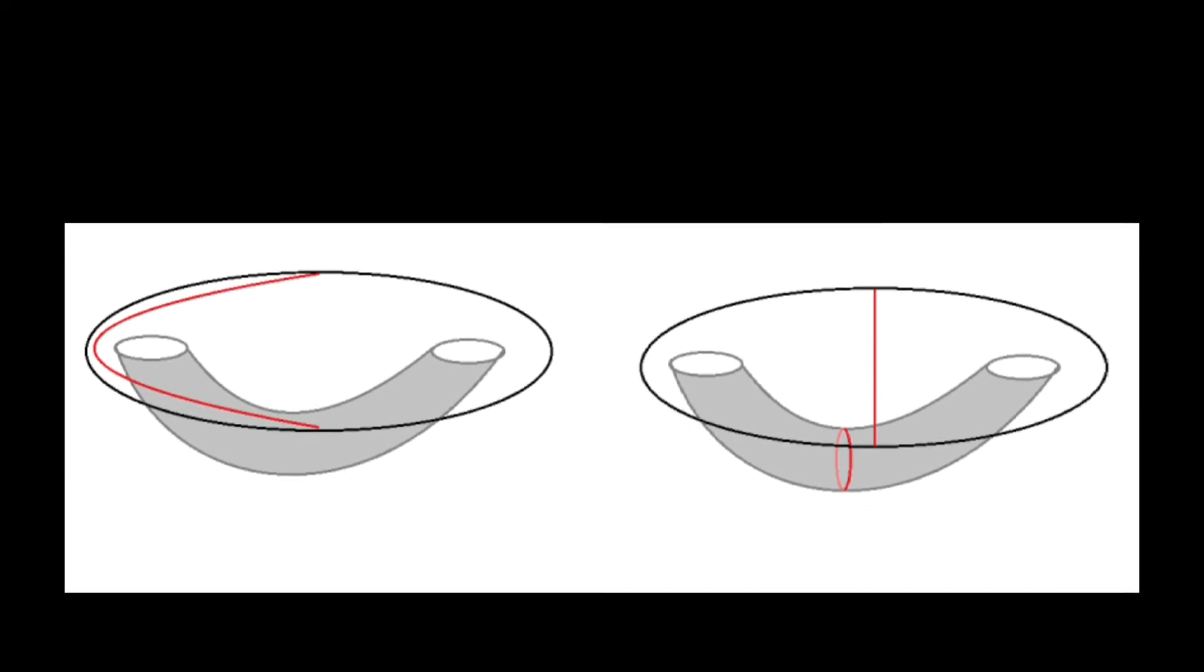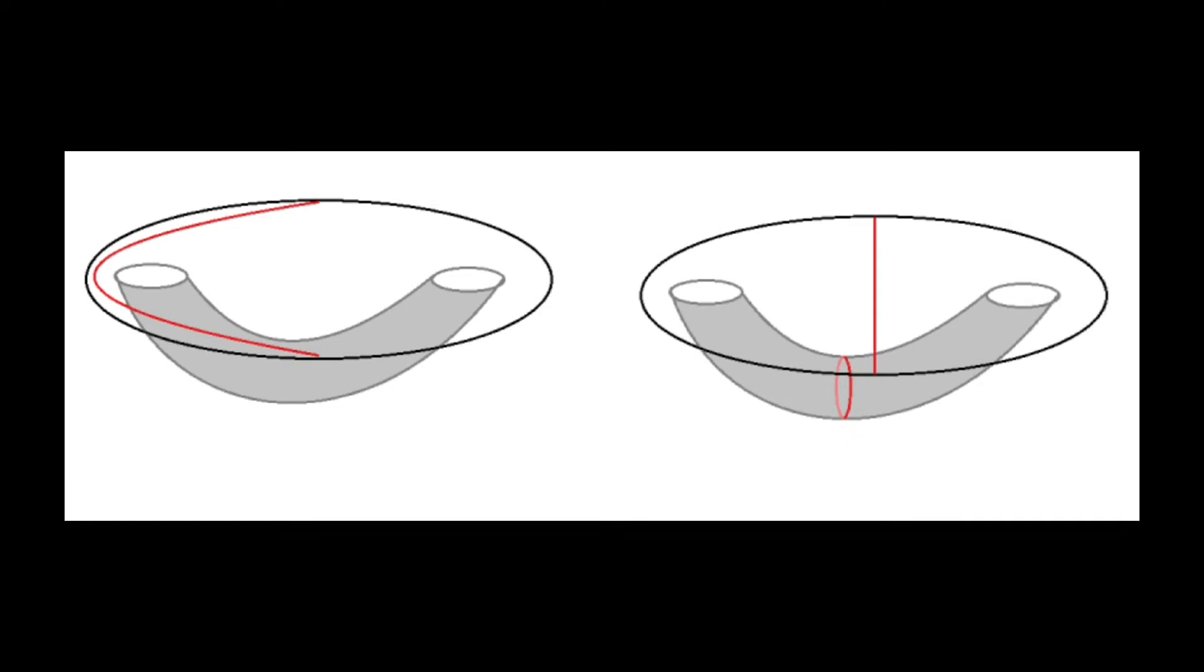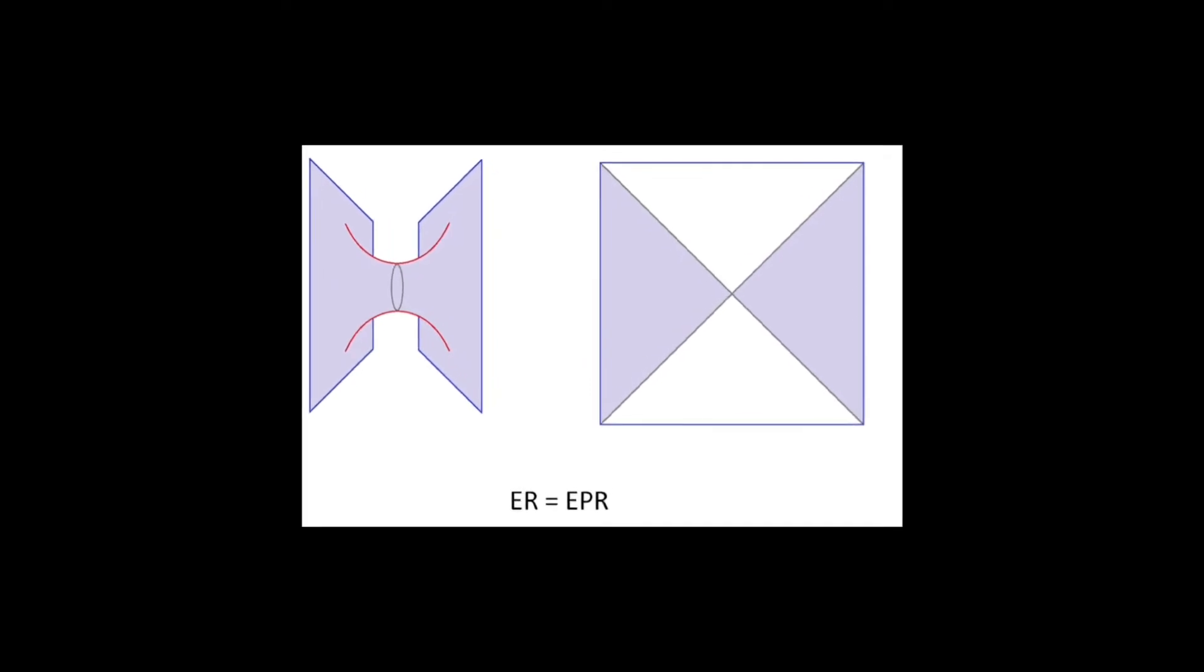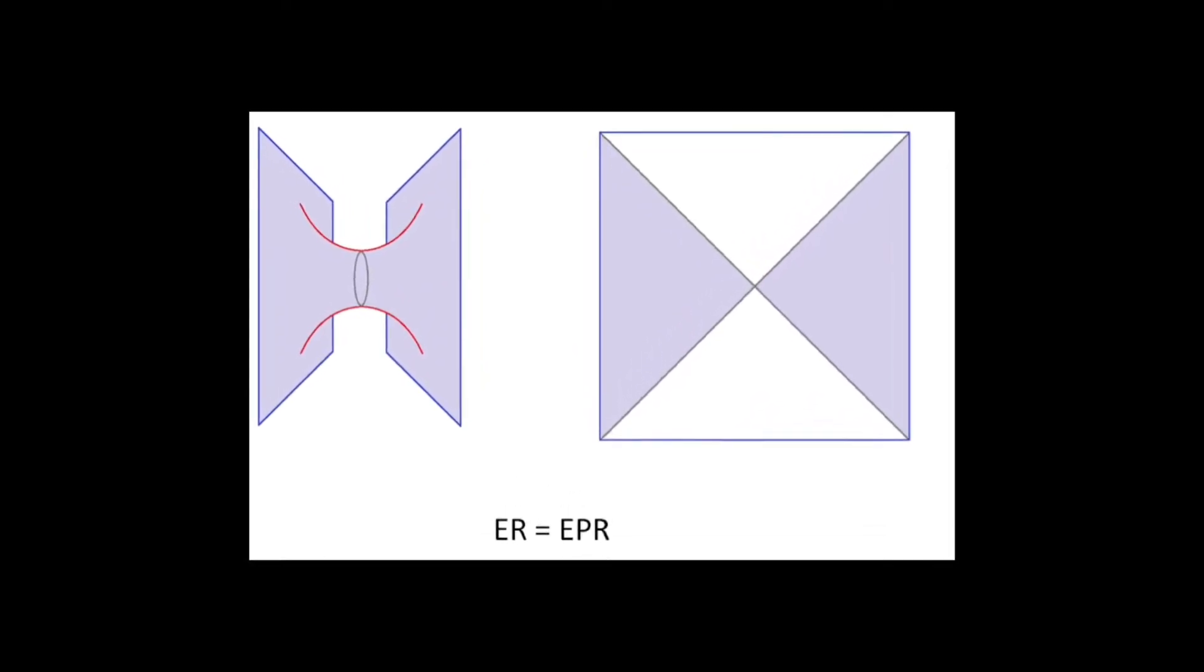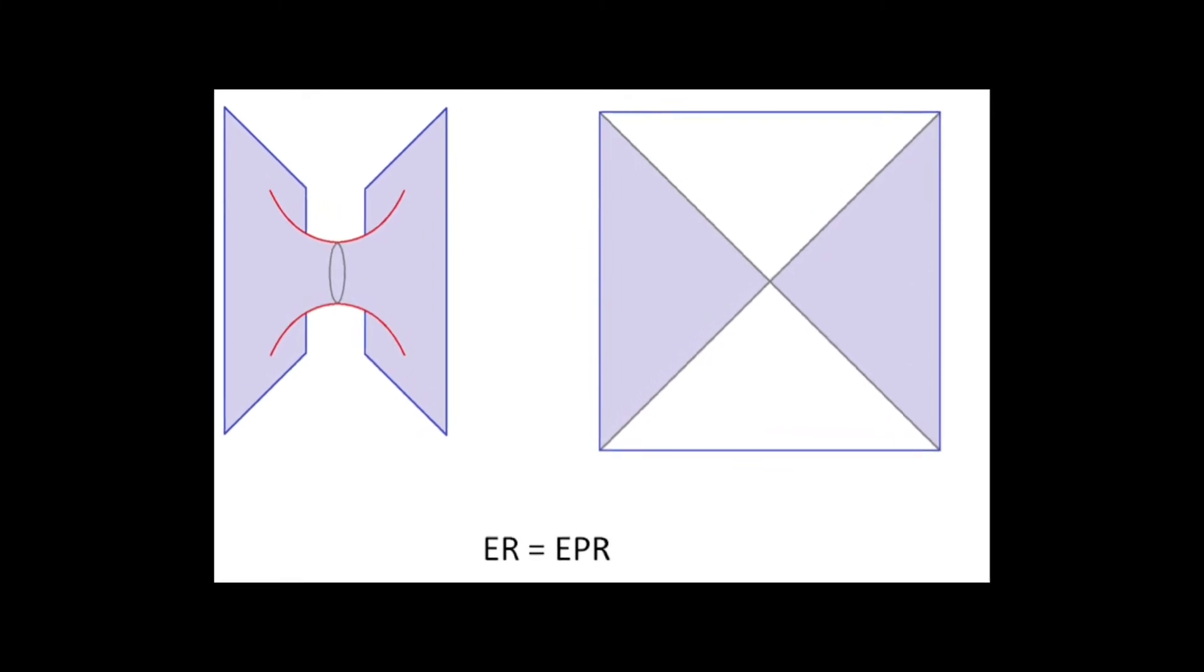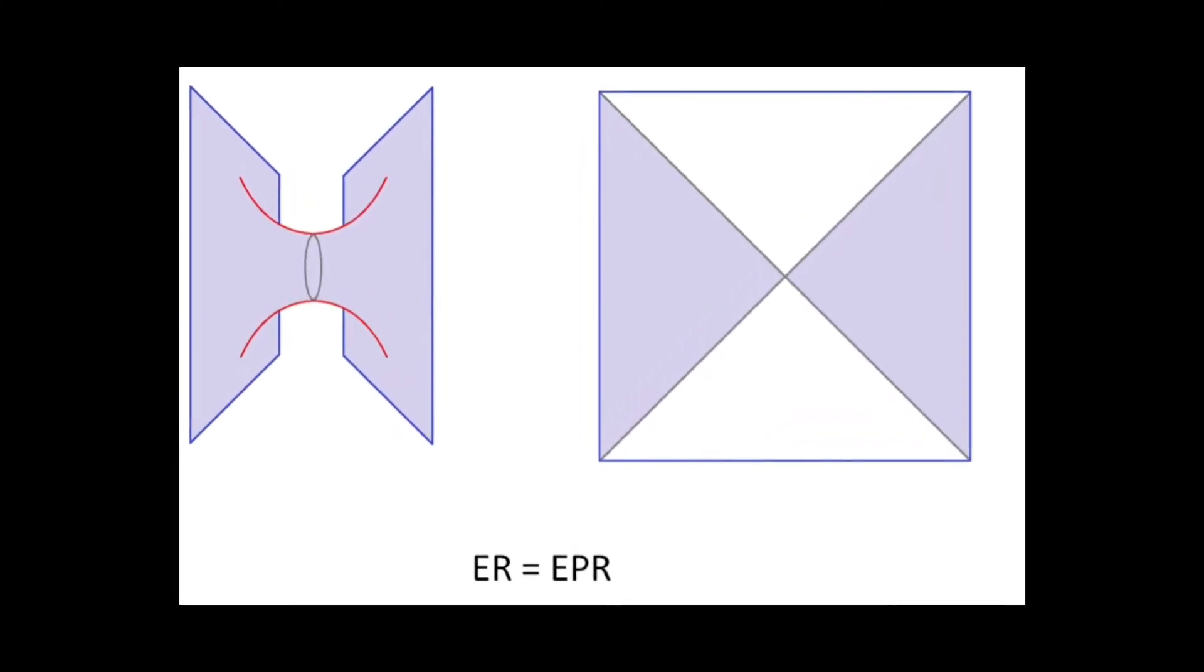Let's first discuss entanglement in the context of black holes. Susskind and Maldacena had proposed the idea of ER equals EPR before. ER means Einstein-Rosen bridge, commonly known as wormhole, and EPR means Einstein-Podolsky-Rosen experiment, which is known as entanglement. The idea of ER equals EPR conjecture is that if you have two systems which are connected by wormhole bridge, then they are also entangled. In this way, entanglement represents the connectivity of space itself.